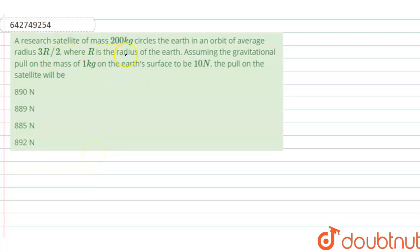Hello, here's a question: A research satellite of mass 200 kg circles the earth in an orbit of average radius 3R/2, where R is the radius of the earth.